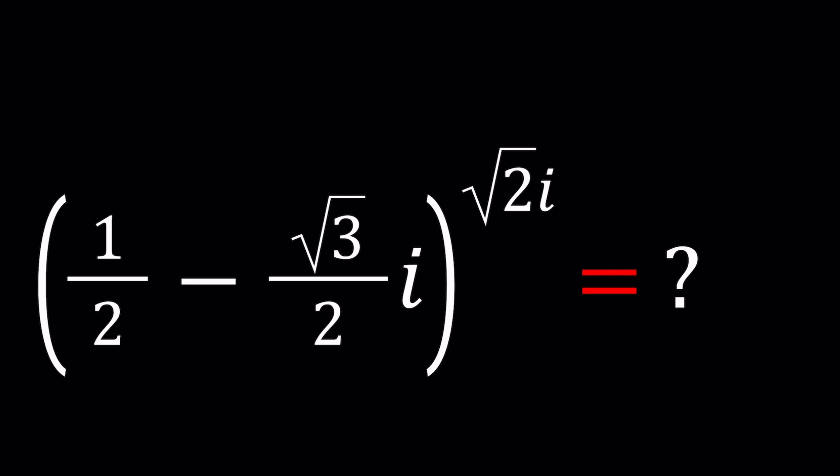In this video we're going to be simplifying an exponential expression with complex numbers. We have one half minus root three over two i to the power root two i and we're going to simplify this expression as much as possible.